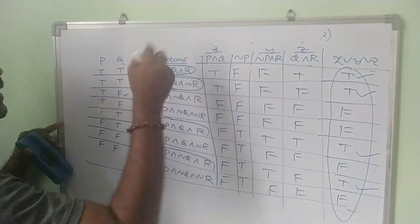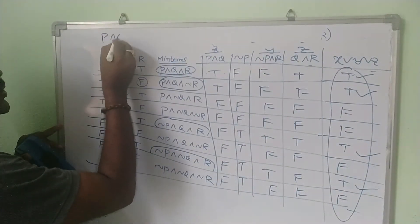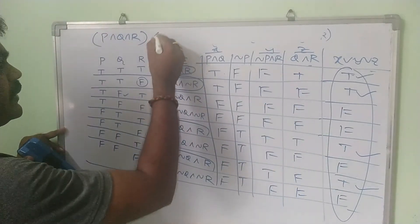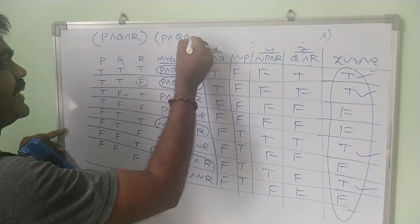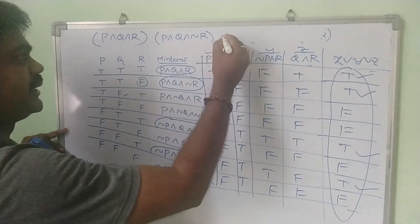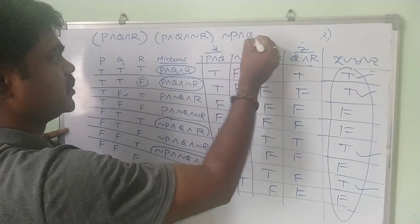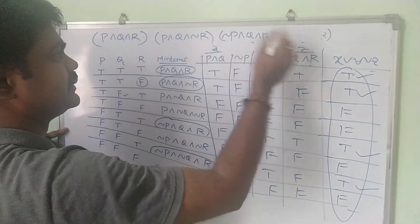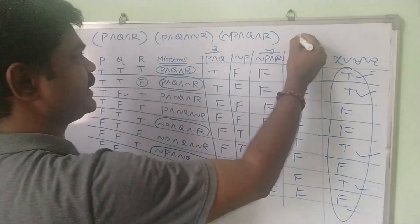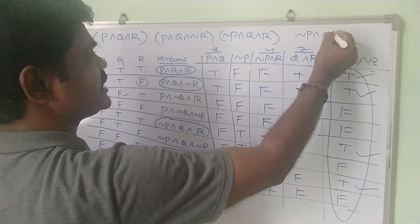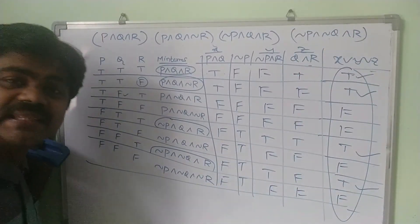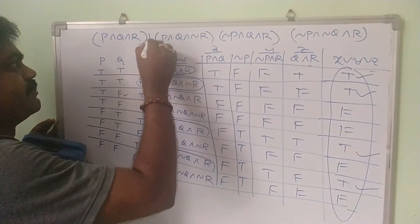The selected minterms corresponding to the true values are: (1) P∧Q∧R, (2) P∧Q∧¬R, (3) ¬P∧Q∧R, and (4) ¬P∧¬Q∧R. These are joined by disjunction (∨) to form the PDNF.